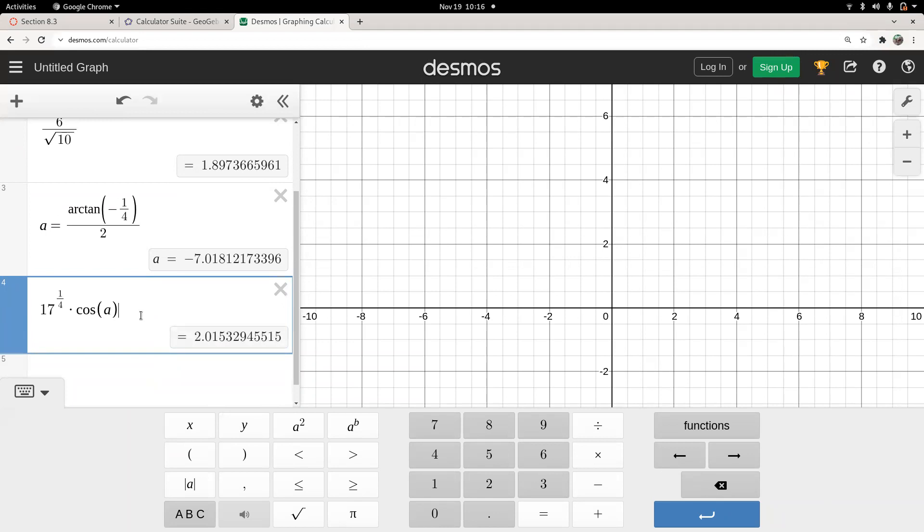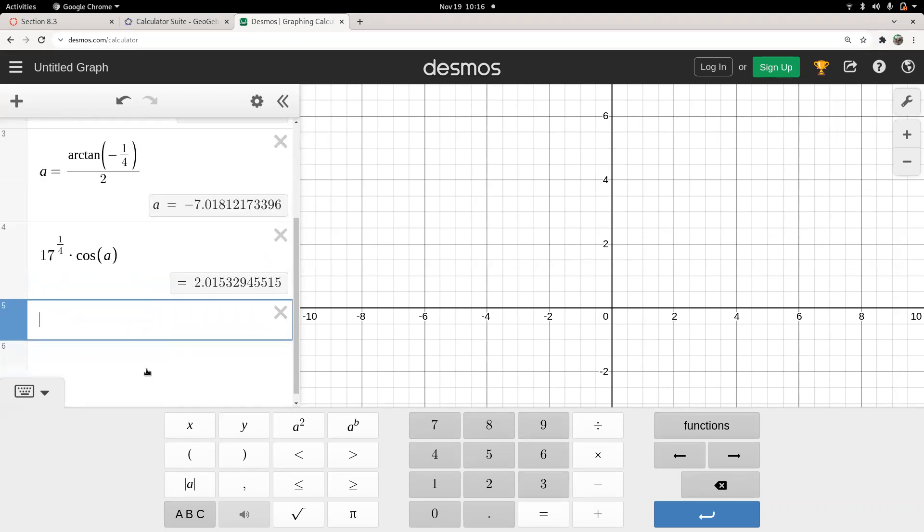And so that says my x value should be two, no, that can't be right. Did I type something wrong there? It does not look like two in my picture. Okay, let's keep going.